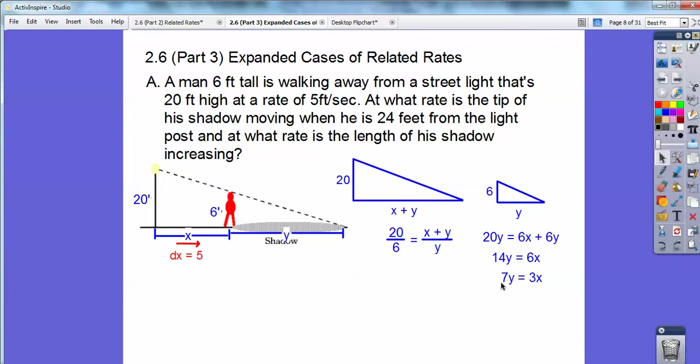When I differentiate that, I'm going to get 7DY equals 3DX. Now I don't know what DY is, but I do know what DX is. DX is 5. So what I'm going to do is find the length of the shadow increasing. So the rate the length of the shadow is increasing is my DY. So I'm going to find that first. When I plug in 5, because DX equals 5,